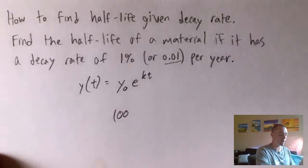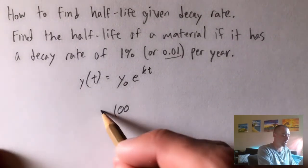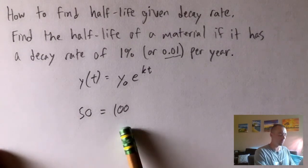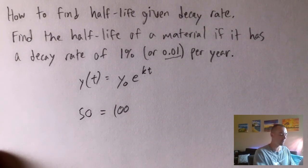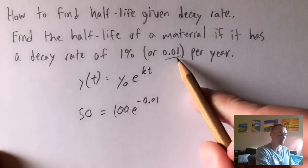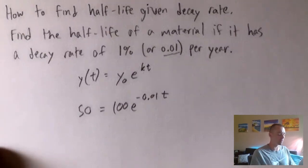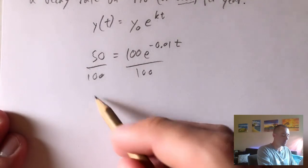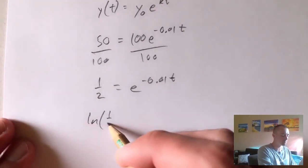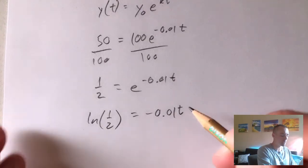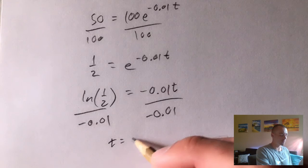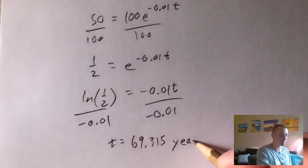Again, we can pick an arbitrary starting amount — let's say 100 grams. After the half-life amount of time, we'll have 50 grams. We still have e, and k = −0.01 was given. So we divide both sides by 100, giving us 1/2 = e^(−0.01t). Take the natural log of both sides, then divide both sides by −0.01. Doing that tells us t = 69.315 years. That's how to find half-life given decay rate.